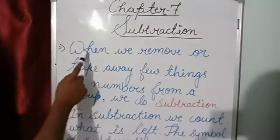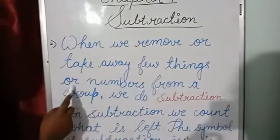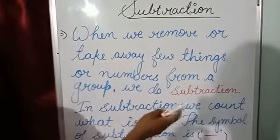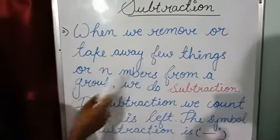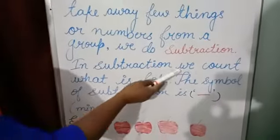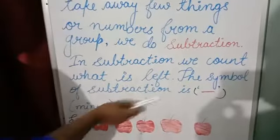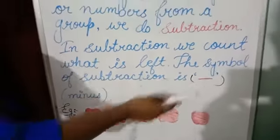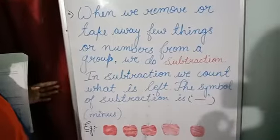Subtraction means when we remove or take away few things or numbers from a group, we do subtraction. When we remove or take away from a group, we do subtraction. In subtraction, we count what is left. The symbol of subtraction is minus. To make this topic easier to understand, let's see an example.